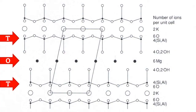This is the crystal structure of a mica mineral, phlogopite, with the monoclinic unit cell marked. It shows the TOT layer — that is, an octahedral layer sandwiched between two tetrahedral layers.